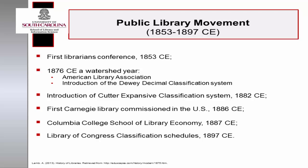1876 CE was a watershed year for libraries and librarianship in the United States. It was the founding year of the American Library Association, and Melville Dewey introduced the Dewey Decimal Classification System in his publication, Classification and Subject Index for Cataloging and Arranging the Books and Pamphlets of a Library. Other milestones included Charles Cutter's introduction of the Cutter Expansive Classification System in 1882 CE, the commissioning of the first Carnegie Library in the United States in 1886 CE, the opening of Columbia College's School of Library Economy in 1887 CE, and the development of the Library of Congress Classification Schedules in 1897 CE. These achievements marked the professionalization of librarianship and introduced standardized practices for arranging collections and cataloging materials.